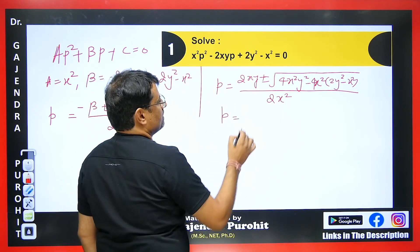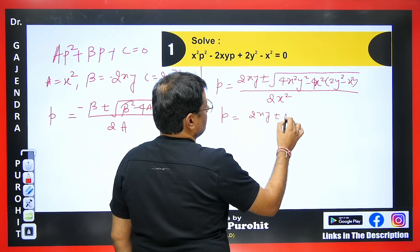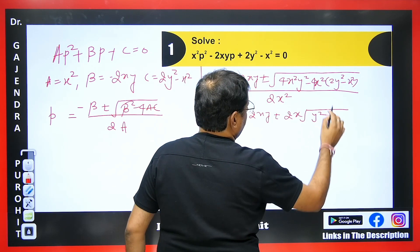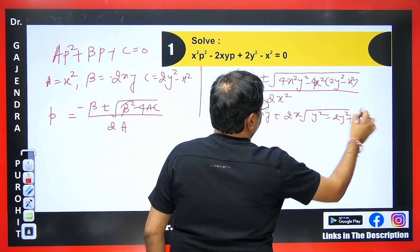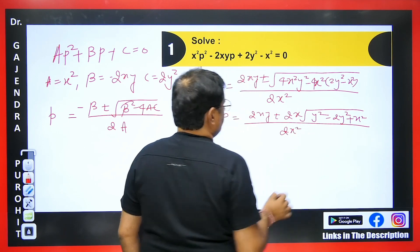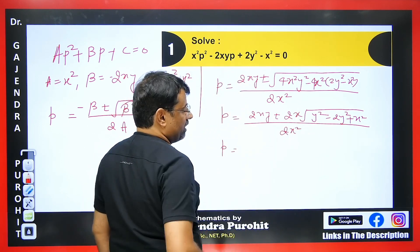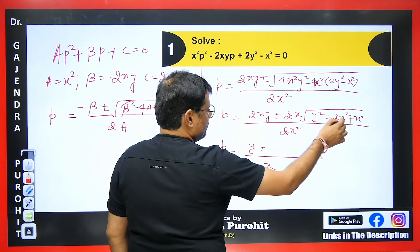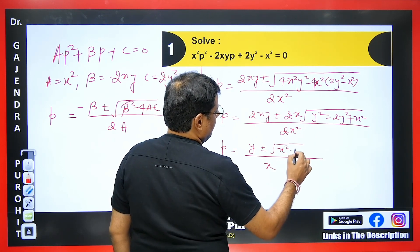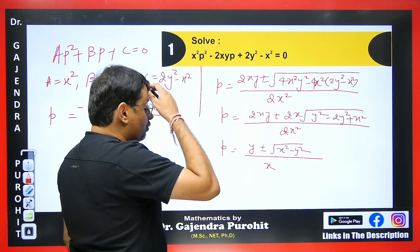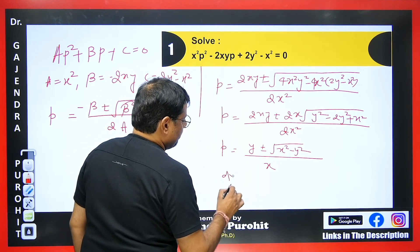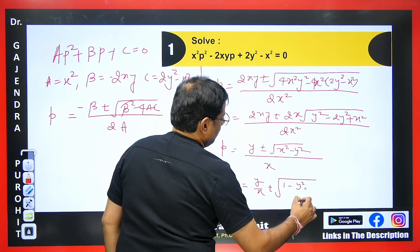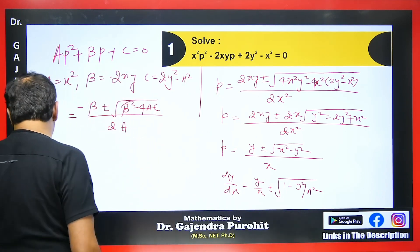We will get P = y/x ± √(x² − y²) / x, which simplifies to P = dy/dx = y/x ± √(1 − y²/x²). You can notice that we are obtaining a homogeneous differential equation. So we can easily solve it by taking y = vx.